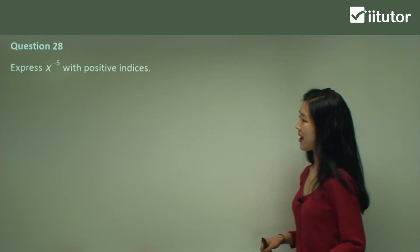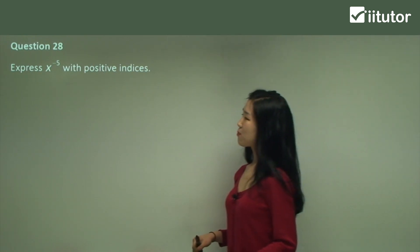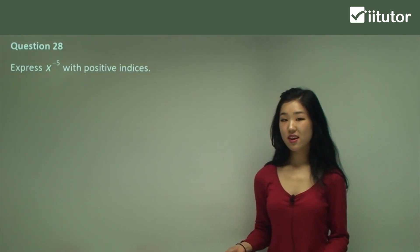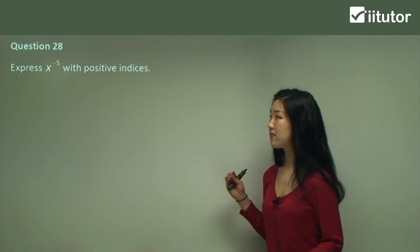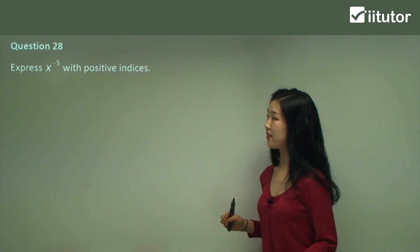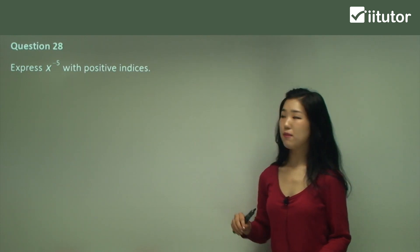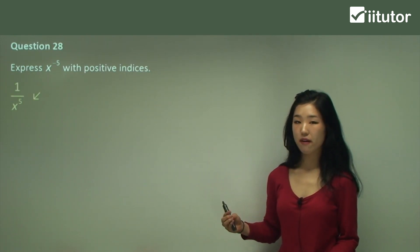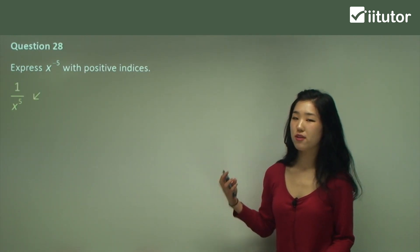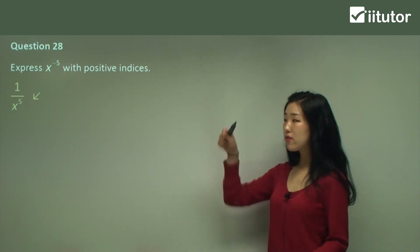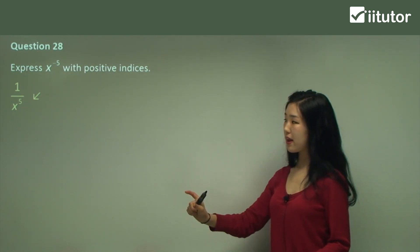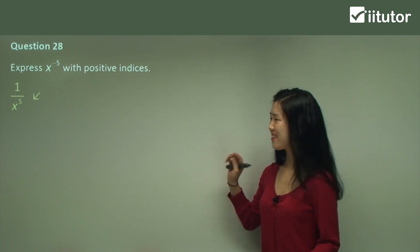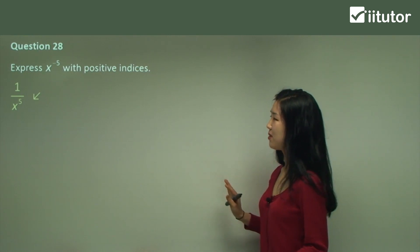Starting with question 28: express x to the power of negative 5 with positive indices. Well, if it's a negative index, we simply move it down to the denominator and have 1 over x to the power of positive 5. So we move it down to the denominator and simply change the sign to positive. It's very, very easy.